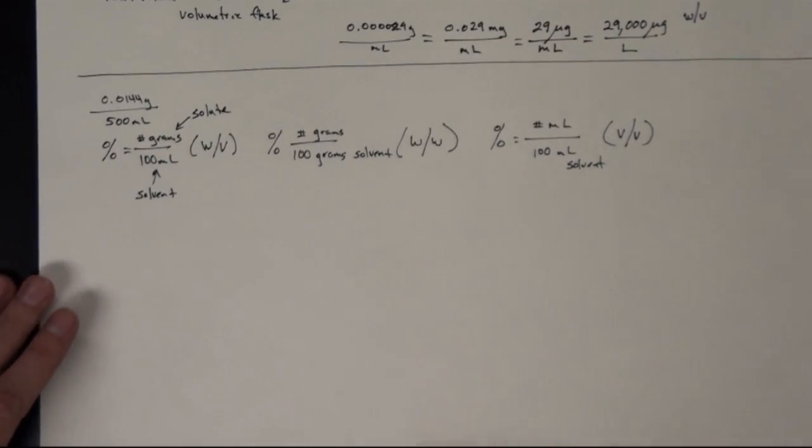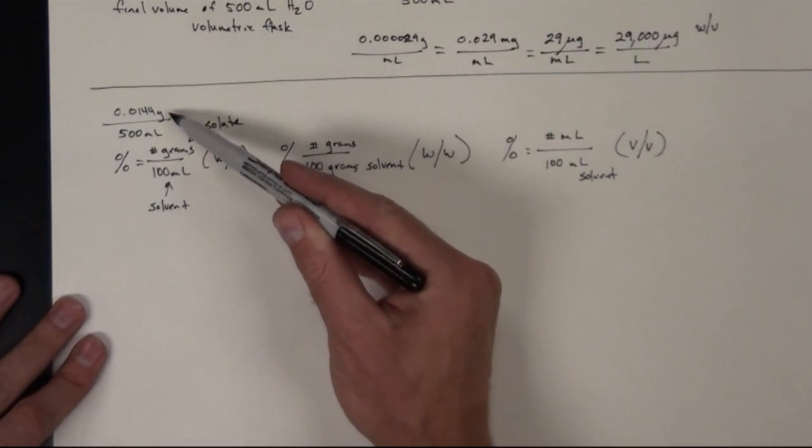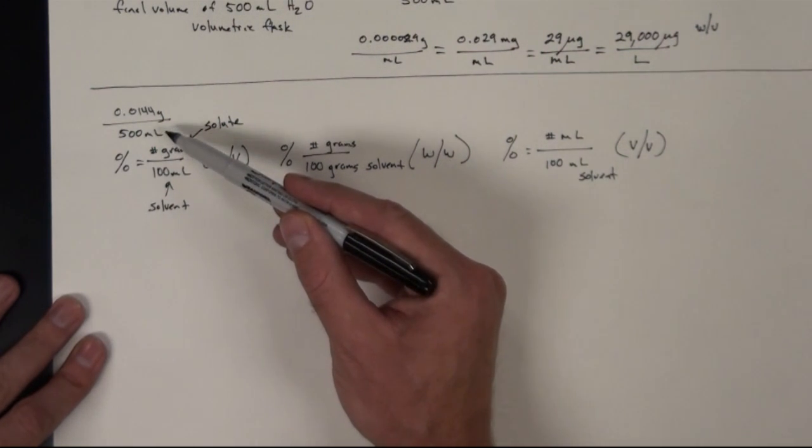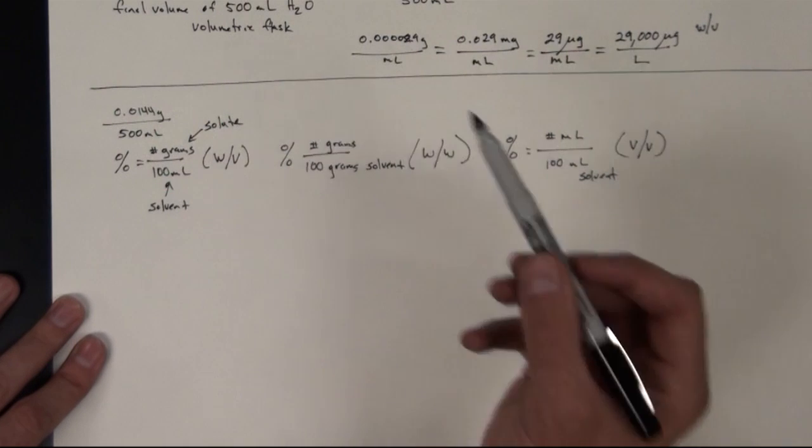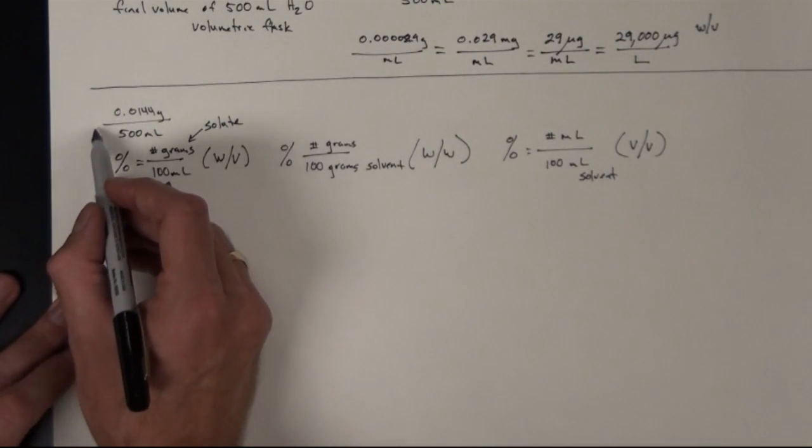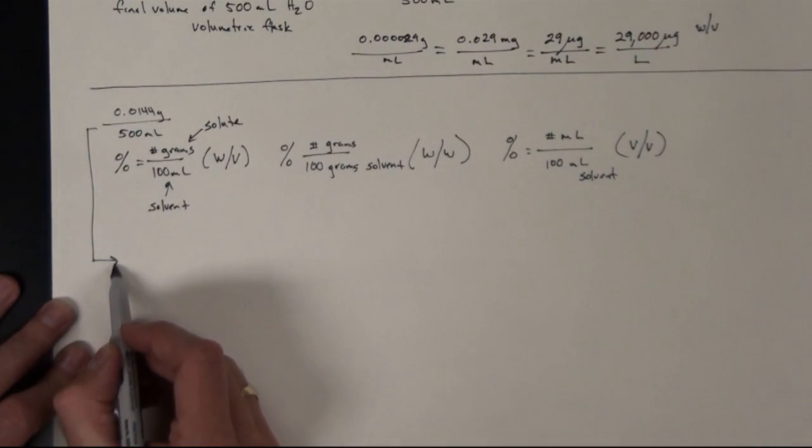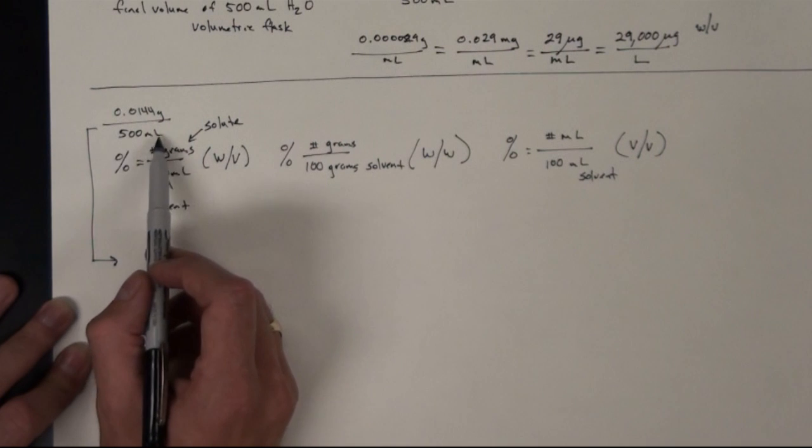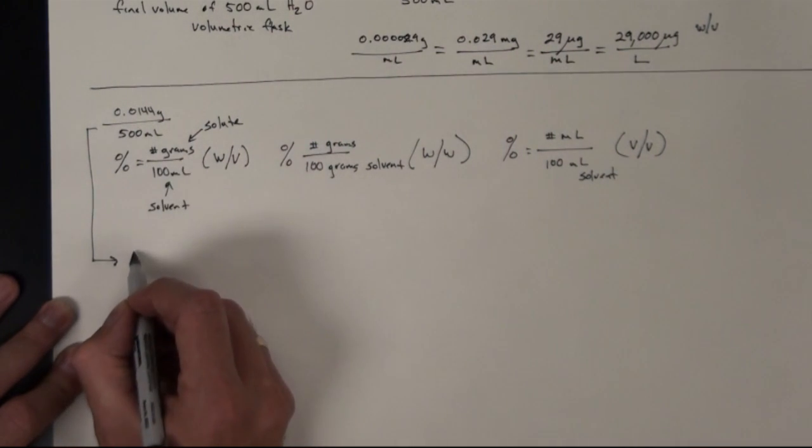So in our particular case, we have grams and we have milliliters. So we'll want to refer to this in terms of a weight volume percentage. This will be fairly simple if we once again bring this information down here. We'll want to get this 500 mils to 100 mils. So we can set up a proportion.